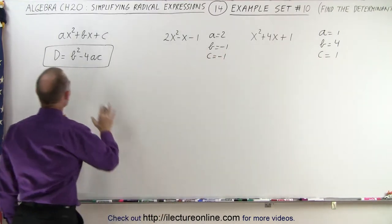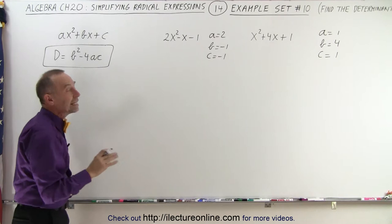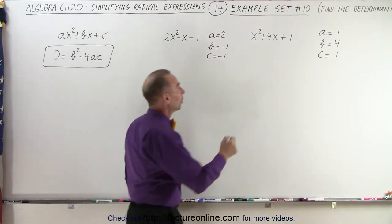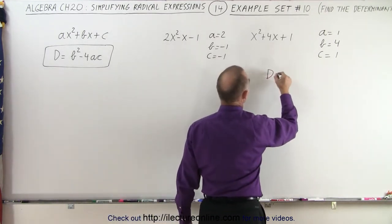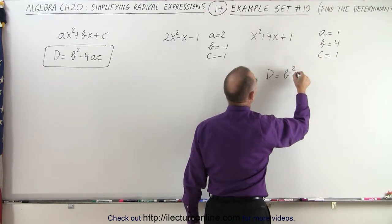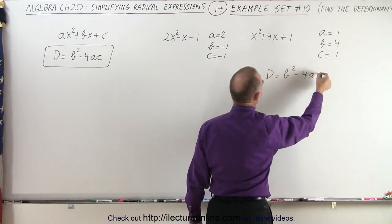So based upon that, can we figure out what d is in each case? We should. We can see here that d by definition is equal to b squared minus 4 times a times c.